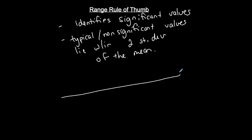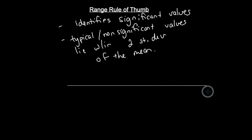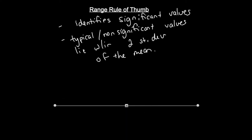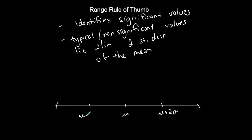Let's just visually look at a number line. Since it's a number line, it's continuing in both directions — let's show the mean is at the center. Two standard deviations above the mean would be: take the mean and add two standard deviations. Two standard deviations below the mean would be: take the mean and subtract two standard deviations.